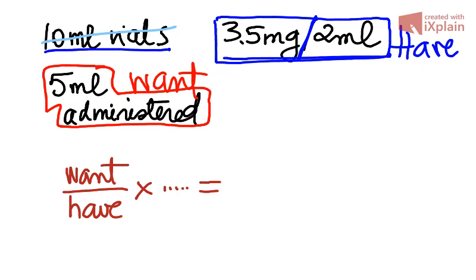So how are we going to set up the formula? We start by writing the fraction want over have. The want must be the 5 ml. And that bit of information is now used. Now, on the bottom,